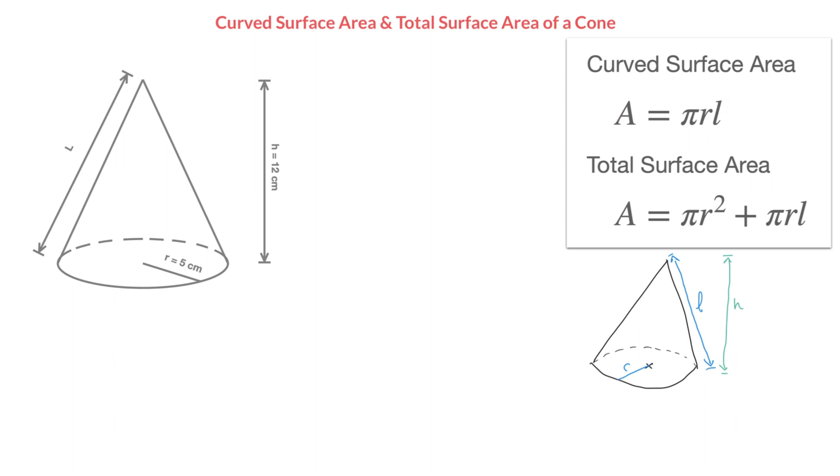Okay, so this is the formula for the curved surface area, which is the area that wraps itself around up here. It doesn't include the base of the cylinder. The total surface area, on the other hand, is equal to pi r squared, or pi times r squared, plus pi times r times l. Now pi r squared is the area of the disk or circle at the base of the cone.